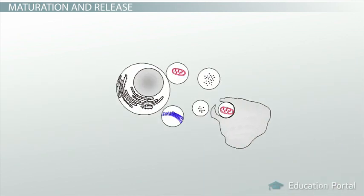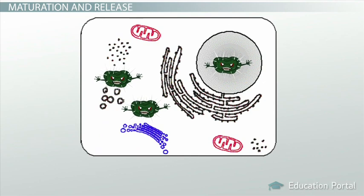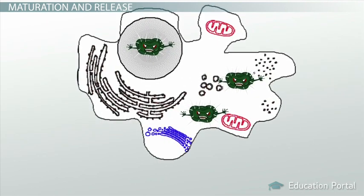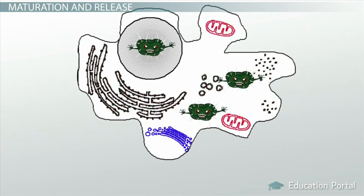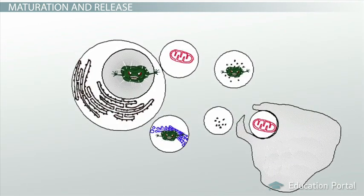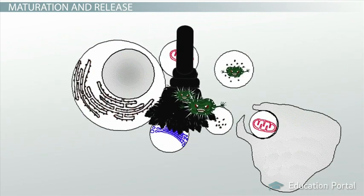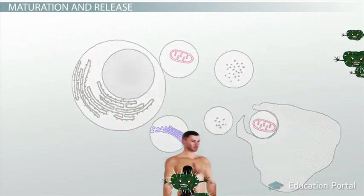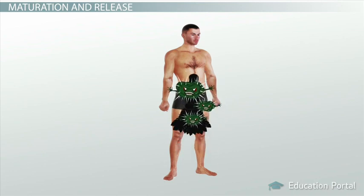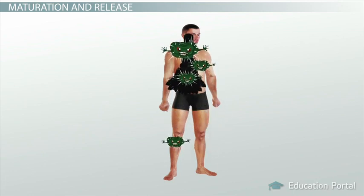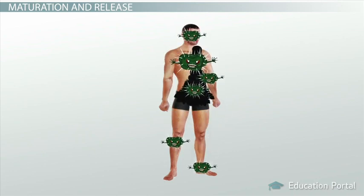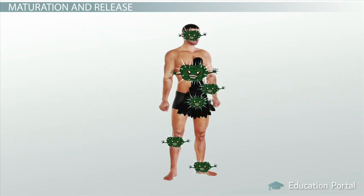Another way the viruses are released is through apoptosis. Like viral budding, apoptosis ends up killing the cell because by definition, apoptosis is programmed cell death. Hence, when the cell dies, the virus will be released or taken up by cleanup crews consisting of cells called macrophages. These macrophages will then spread all over the body, taking viruses with them, thereby spreading the virus to other parts of the body.